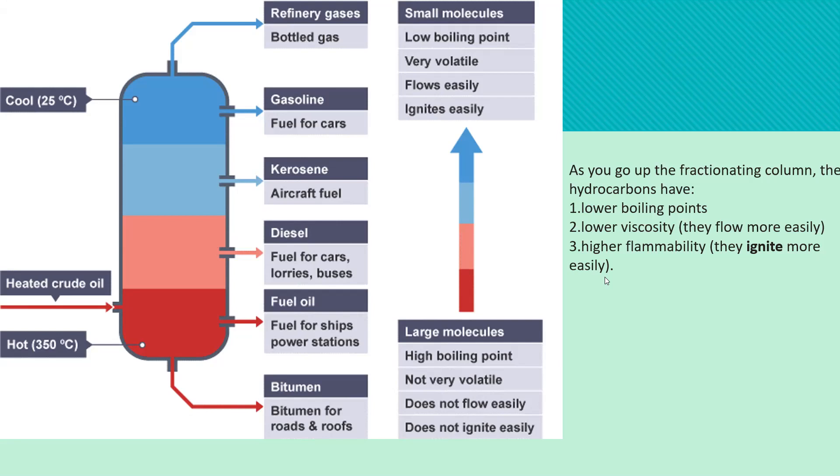So larger molecules have high boiling points, are not very volatile, do not flow easily, and do not ignite easily. And as you go up the column itself, they have low boiling points, they're very volatile, they flow easily and they ignite easily.